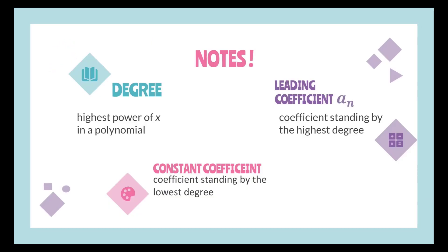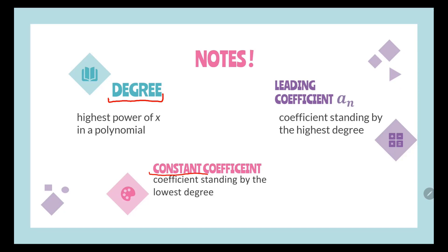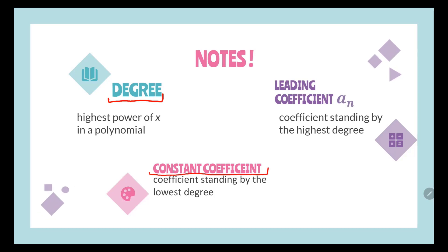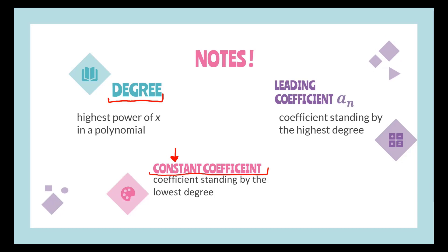Let's look at the notes. Degree refers to the highest power of x in a polynomial. Constant coefficient refers to the coefficient standing by the lowest degree — that means there is no x. Leading coefficient is the coefficient standing by the highest degree.